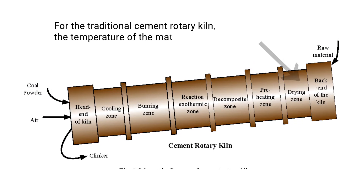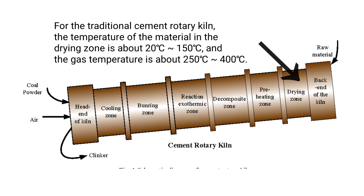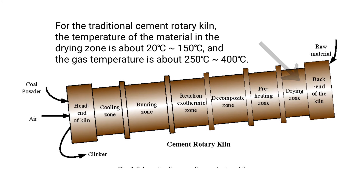Drying zone: for the traditional cement rotary kiln, the temperature of the material in the drying zone is about 20 to 150 degrees Celsius, and the gas temperature is about 250 to 400 degrees Celsius.